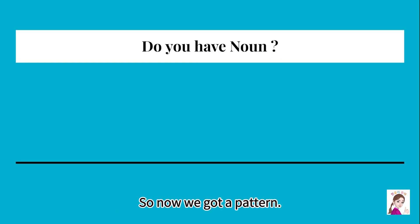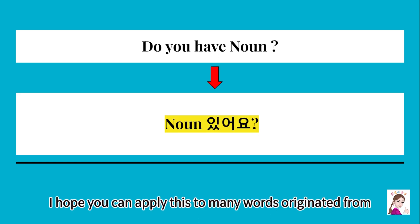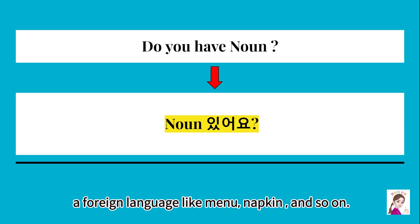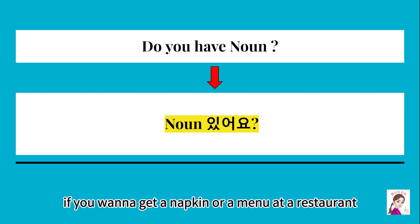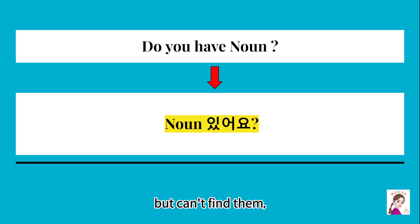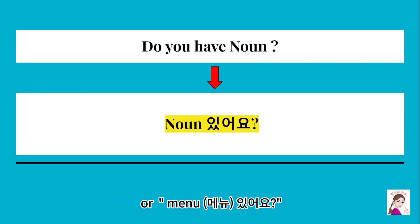So now we have a pattern: 'Do you have a noun?' means 'Noun 있어요?' It's so simple. You can apply this to many words borrowed from foreign languages, like menu, napkin, and so on. For example, if you want a napkin or a menu at a restaurant but can't find them, you can ask: NAPKIN 있어요? or MENU 있어요?